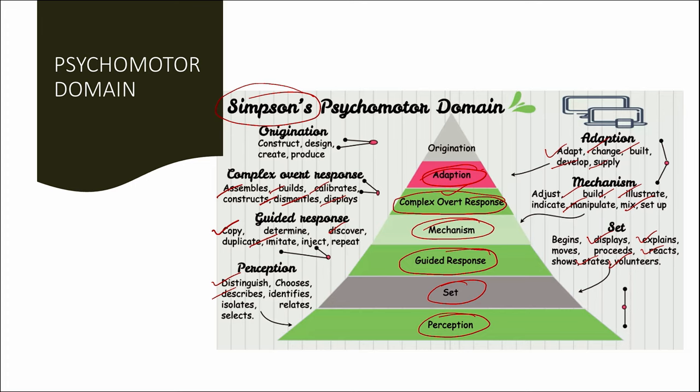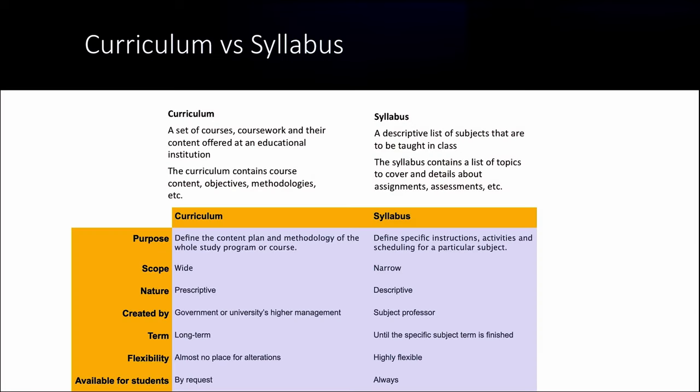This is called adaptation. Finally, the tip of the psychomotor domain pyramid is origination. What we called creating in cognitive domain and characterizing in affective domain is called origination in psychomotor domain — where we construct, design, create, and produce the skills or set of procedures. That is the Simpson psychomotor domain for level of learning.